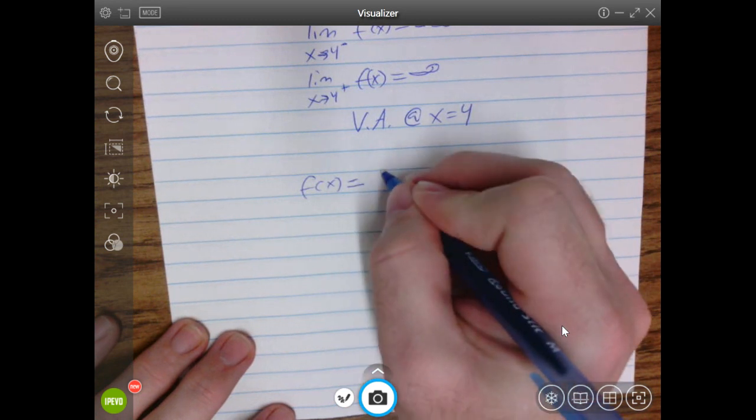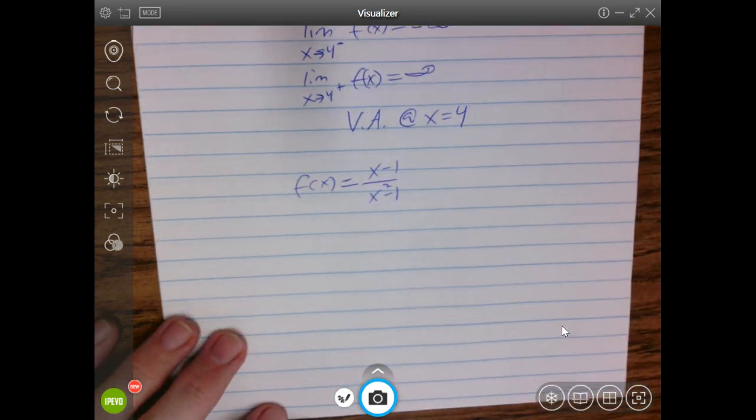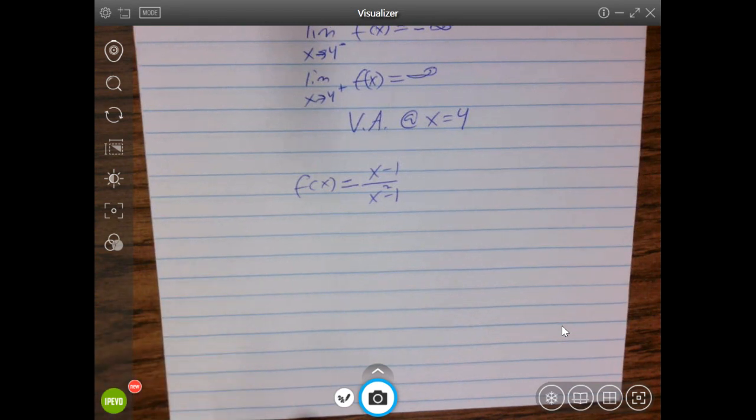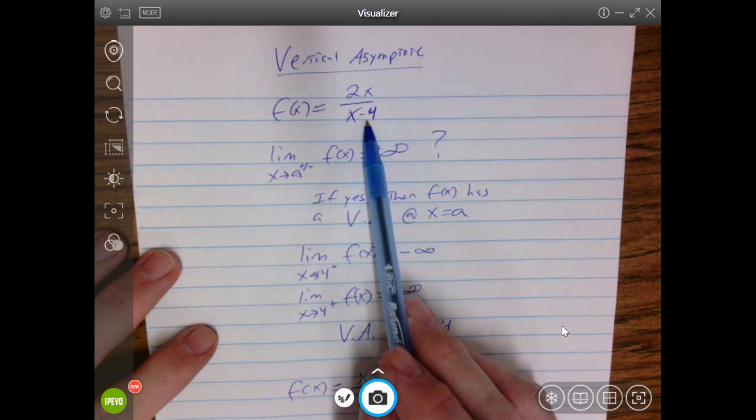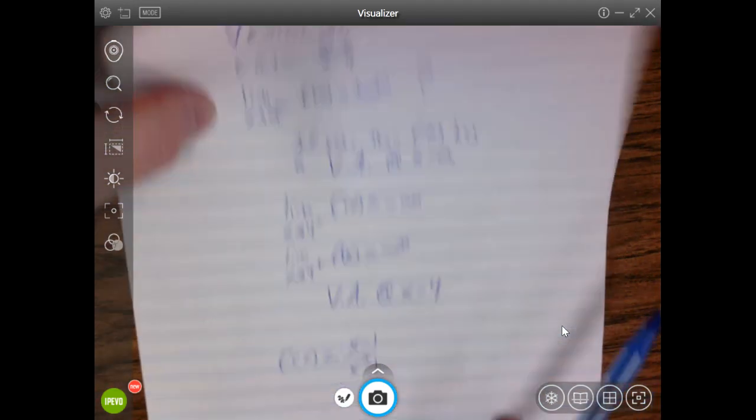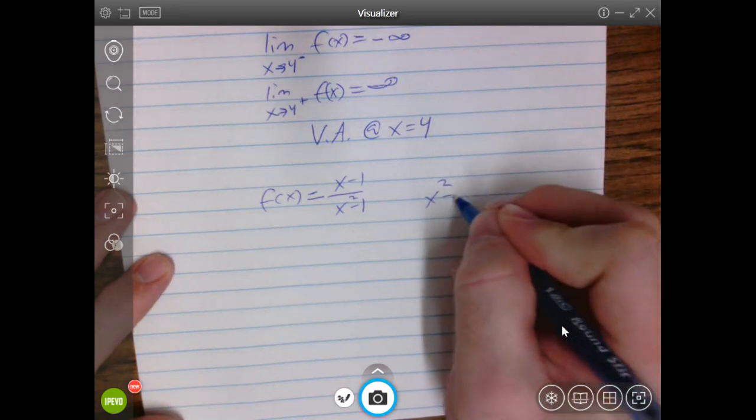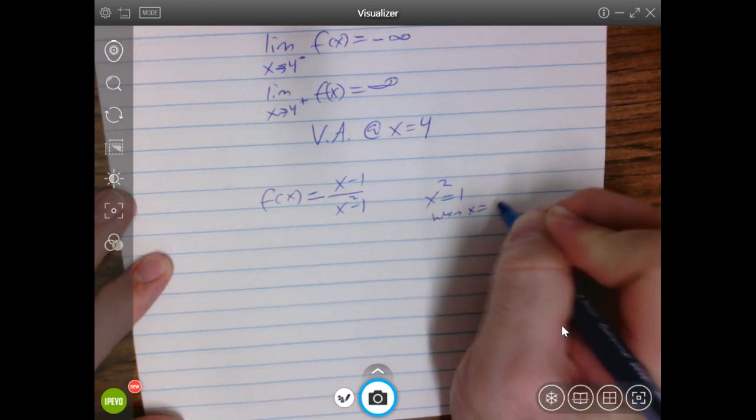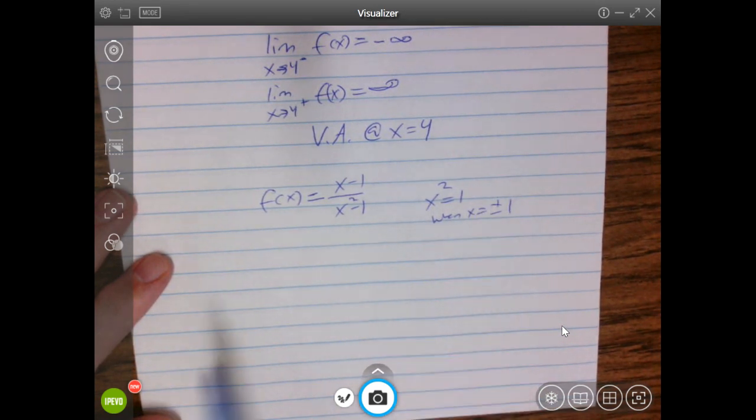So suppose our function looks like this instead. So you're feeling pretty good. You're like, all right, I can figure this out. All I got to do is figure out what makes the denominator zero. So you look at this one really quickly, and you're like, oh, x squared minus 1. So x squared would equal 1 when x is plus or minus 1, right? So you're thinking you've got vertical asymptotes at plus and minus 1.